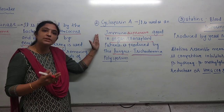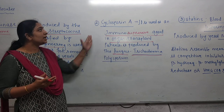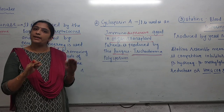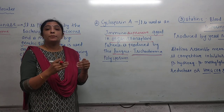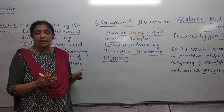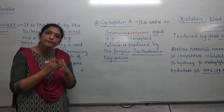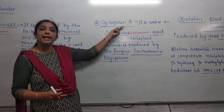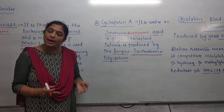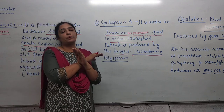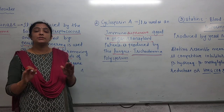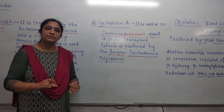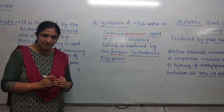So as soon as the organ transplant happens, immediately after that, cyclosporin is administered. Why? Because it suppresses our immune response. It suppresses the effect that would otherwise start removing foreign organs like the kidney. That effect is suppressed. That is very important — if cyclosporin is not given, then the graft will be rejected. Any organ transplantation process will never work out. It works out because cyclosporin suppresses the patient's immune response.